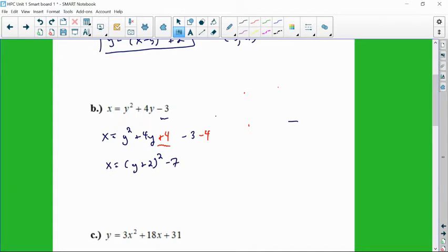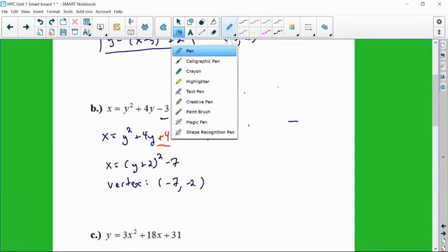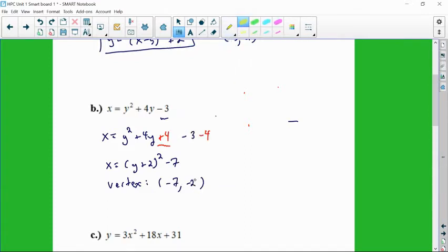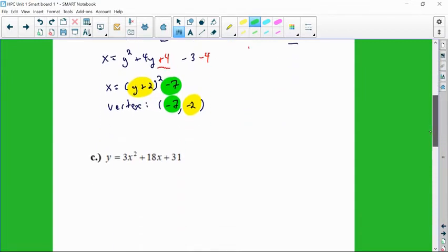Now, be very careful if I asked you what's the vertex, because even though it's x equals, the x and the y still are the same positions in terms of naming a point. So the vertex is actually negative 7 comma negative 2, because this negative 2 is a y component that makes that value equal to 0. And then the negative 7, which is here, is an x component, so we put that there. So it's still x comma y. It's just that it appears differently in the actual equation because it's a parabola that's not a function.